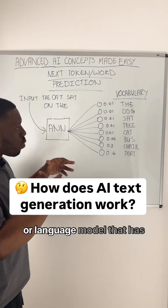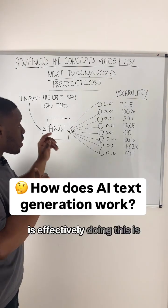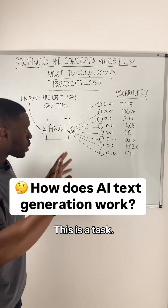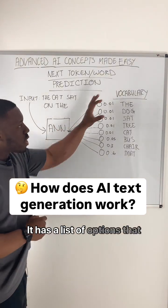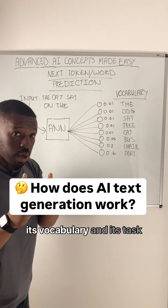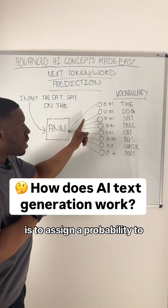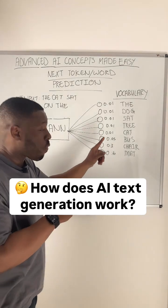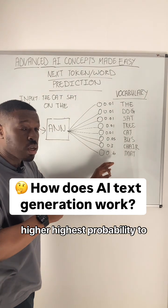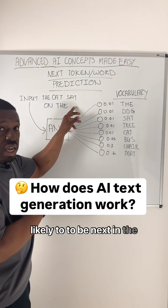An artificial neural network or language model that has been trained to generate text is effectively doing this task over and over again. It has a list of options it could choose from called its vocabulary, and its task is to assign a probability to all of the options in its vocabulary, assigning the highest probability to those words that are most likely to be next in the sequence.